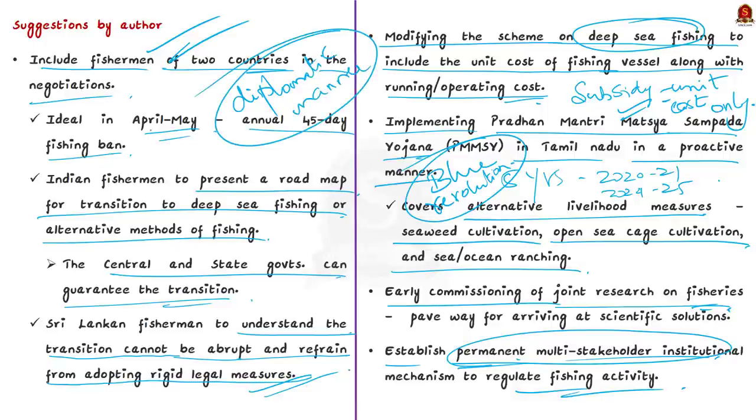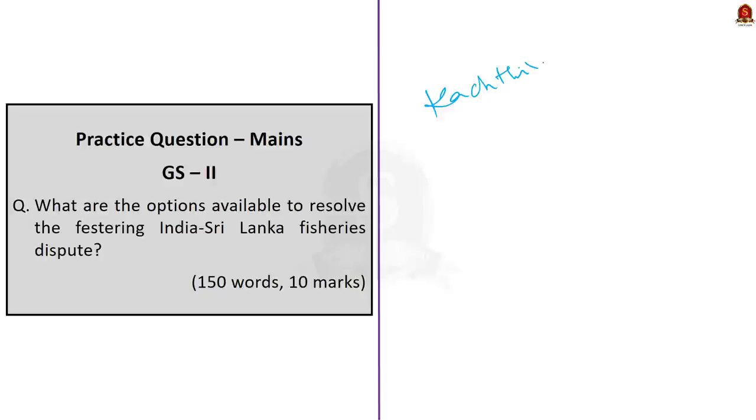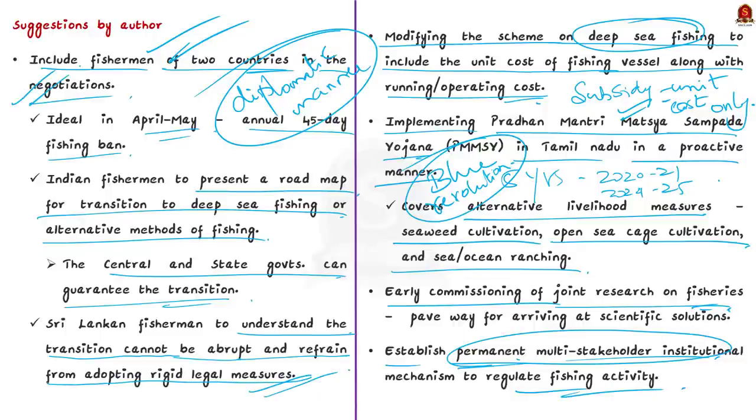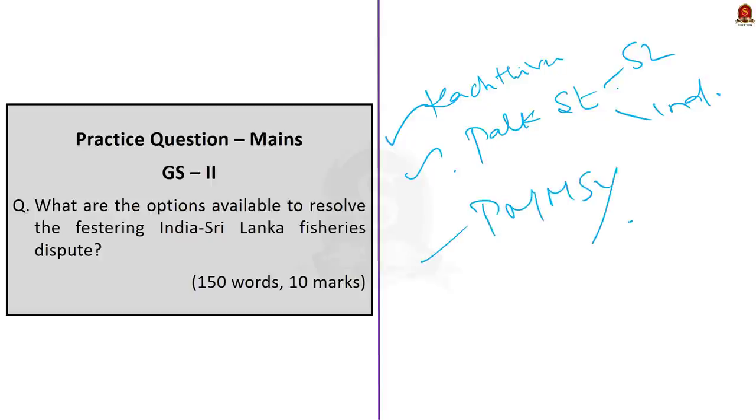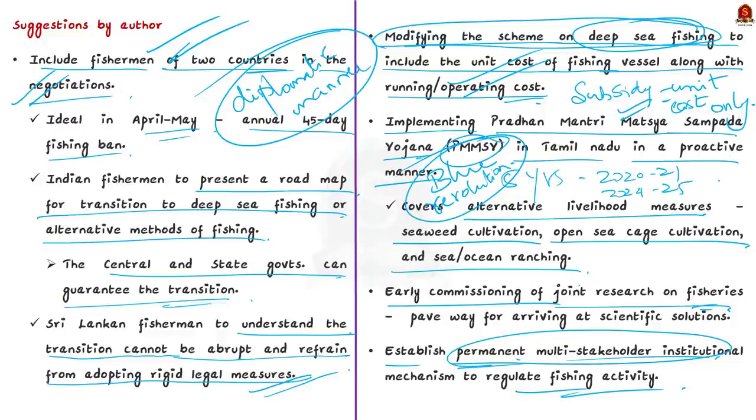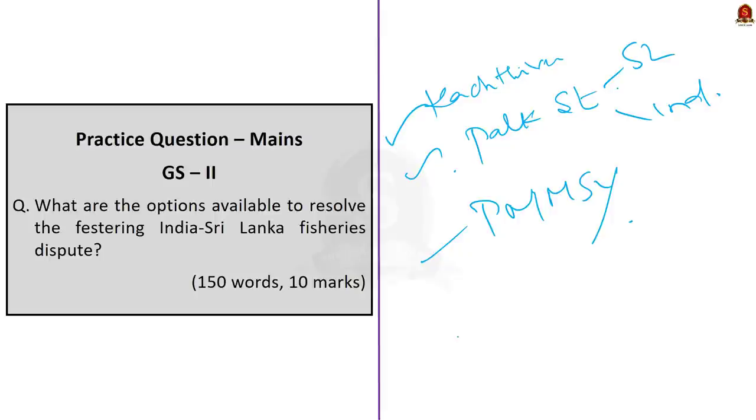In this editorial, we saw about Kacchathivu, a tiny rocky island in Park Strait, which separates Sri Lanka from India. We've seen issues like use of mechanized fishing vessels and practicing bottom trawling. We saw important suggestions: include fishermen of both countries in negotiations, modify deep sea fishing schemes to include operating costs, implement Pradhan Mantri Matsya Sampada Yojana, commission joint research on fisheries, and establish an institutional mechanism to regulate fishing activity.